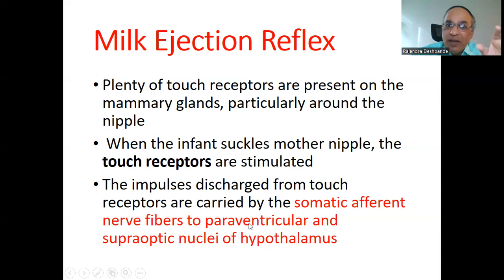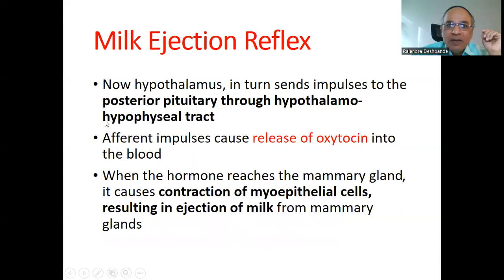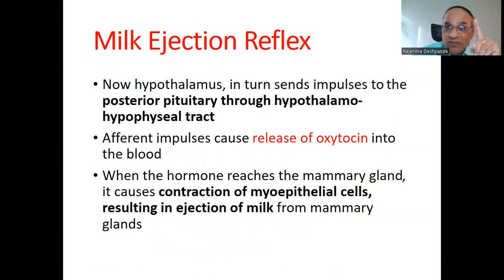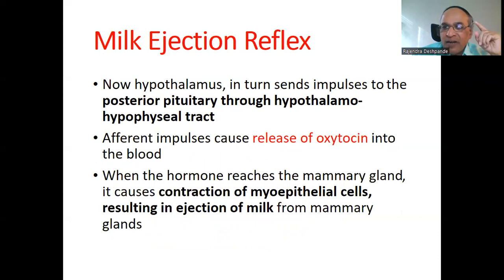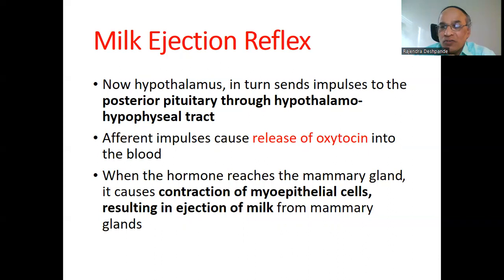So, these somatic afferent nerve fibers go towards the hypothalamus, to the paraventricular and supraoptic nuclei. After getting the signal, the hypothalamus sends an impulse to the posterior pituitary through the hypothalamo-hypophysial tract — a specific tract connecting the hypothalamus to the posterior pituitary. These afferent impulses cause the release of oxytocin into the blood.